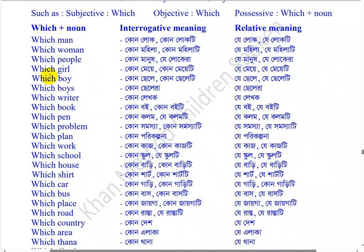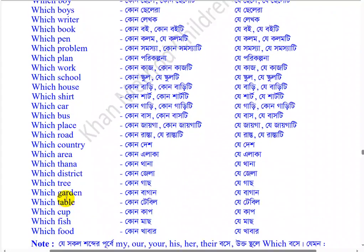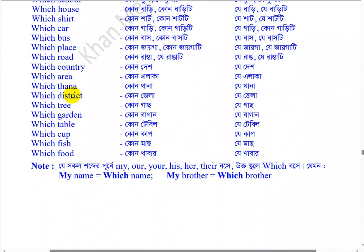Which person? Which girl? Which boy? Which writer? Which book? Which pen? Which public? Which plant? Which work? Which school? Which house? Which shirt? Which car? Which bus? Which place? Which route? Which country? Which area? Which thana? Which district? Which tree? Which garden? Which table? Which cup? Which fish?